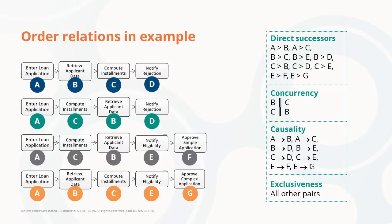The only pair of activities for whom this is different is the pair B and C. We have seen in the direct successor relations that B is followed by C, but we have also found that C is followed by B. This means this pair of activities belongs to the concurrency relation. All other relationships that we have not yet mentioned are exclusive to one another.